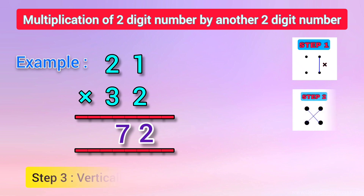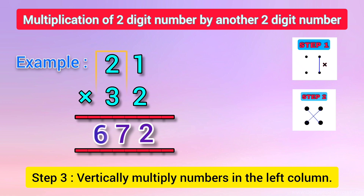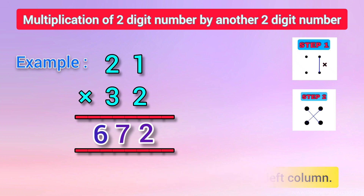In the last step, we need to multiply the digits in the left column vertically. That is, 2 multiplied by 3 is equal to 6. Therefore, the product of 21 and 32 is equal to 672.